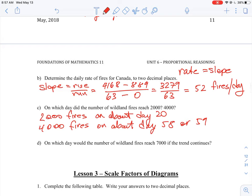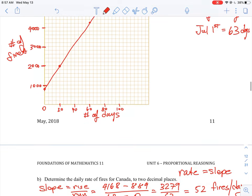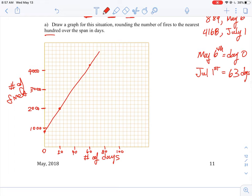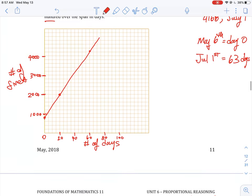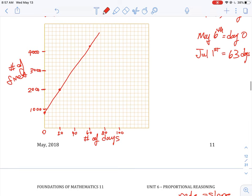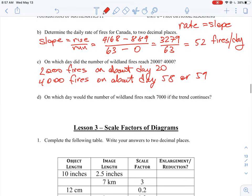And then for D, if we needed to go further, you would need to extend your line to 7,000. So we might have to take that out a little bit longer or rework the scale. But 7,000 would just be a point higher up on the line, and it would tell you about how many days it would be there. So that's how that question would go.